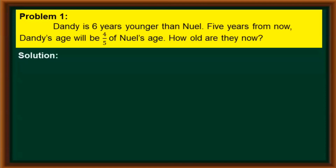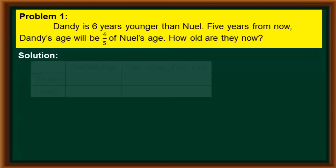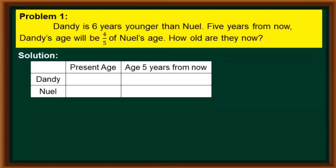Let's start with our solution. We organize first the given in our problem using a table. We prepare a three-column table. The first column is allotted for the persons involved in our problem, the second column for their present ages, and the third column for their ages five years from now.